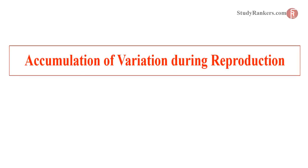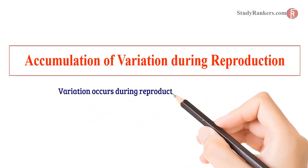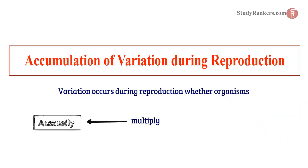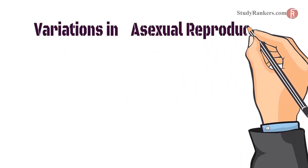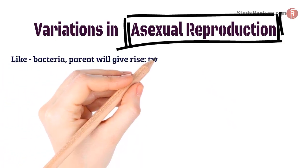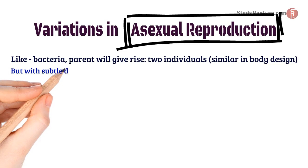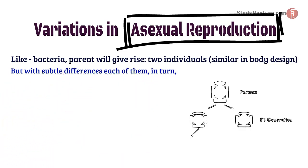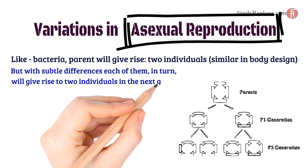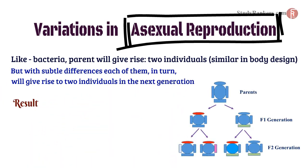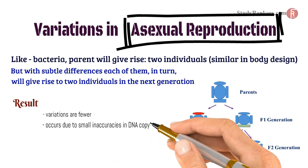Now we will study about accumulation of variation during reproduction. Variation occurs during reproduction whether organisms multiply asexually or sexually. In asexual reproduction, like bacteria, the parent will give rise to two individuals similar in body design but with subtle differences. Each of them in turn will give rise to two individuals in the next generation. Variations are fewer and occur due to small inaccuracies in DNA copying.